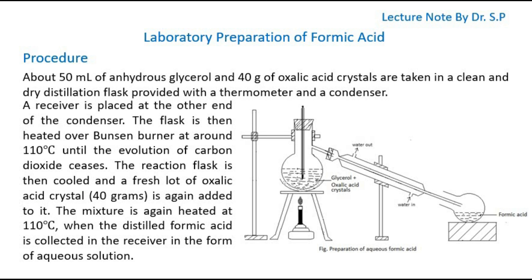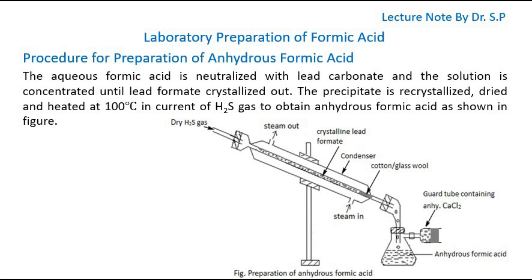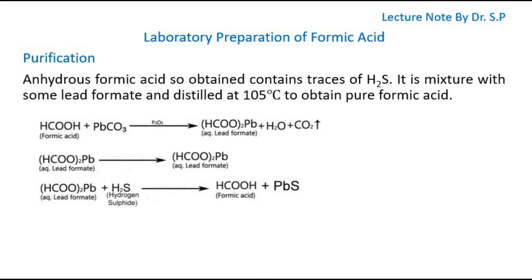For the preparation of anhydrous formic acid, the aqueous formic acid is neutralized with lead carbonate and the solution is concentrated until lead formate crystallizes out. The precipitate is recrystallized, dried, and heated at 100 degrees Celsius in a current of hydrogen sulfide to obtain anhydrous formic acid, as shown in the figure.